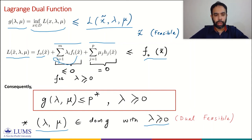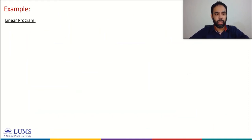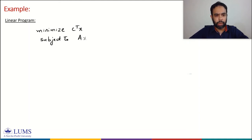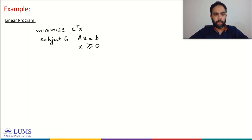Let's look at a simple example where we determine the Lagrangian and Lagrange dual function. We take a linear program in standard form: minimize cᵀx subject to Ax = b (affine equality constraints) and x ≥ 0 (a single inequality constraint that x lies in the non-negative orthant). Any linear program can be formulated in this standard form by introducing slack variables to convert inequality constraints into equality constraints.